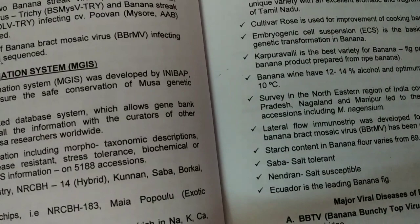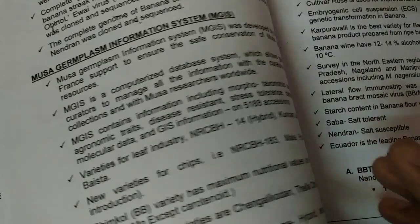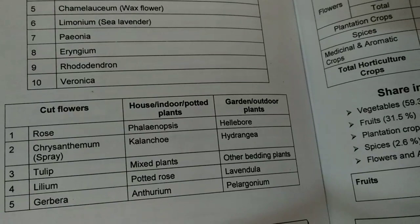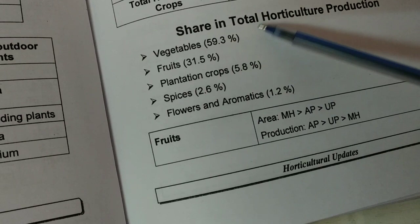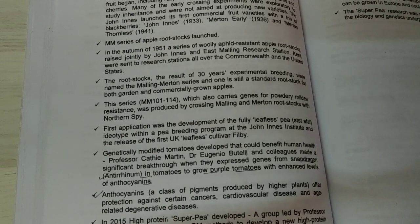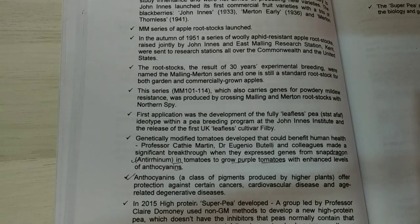All updates related to NRC directorates are mentioned in this book, including recent area and production data. Questions are being asked in exams about the share of total horticulture production in the case of vegetables, fruits, and plantation crops. Similarly, some international updates — including new updates from the John Innes Institute at Iglan — are also covered.